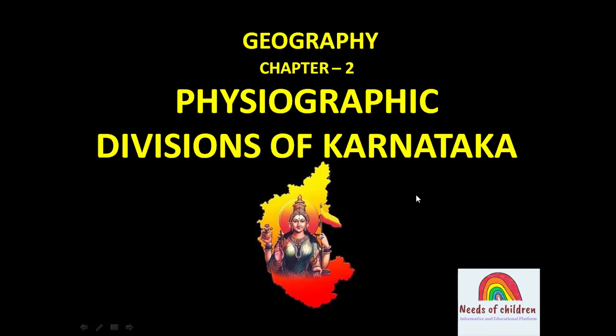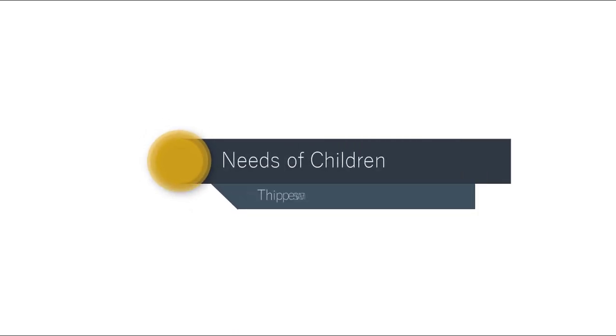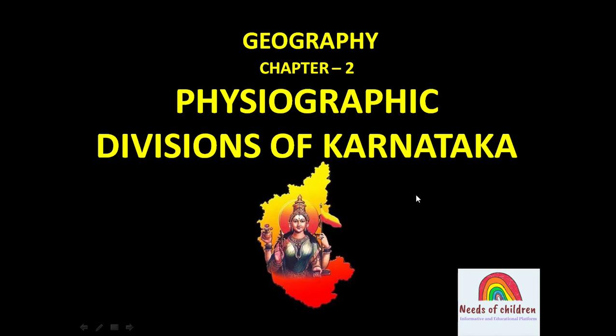Hi, hello, namaste! Welcome back. In this session, we are going to get information about 9th standard English medium Social Science Geography, Chapter 2 continued — physiographic divisions of Karnataka. In the previous session, we covered the first physical division, the coastal plain. Now in this session, we are going to learn about the Malnad region.